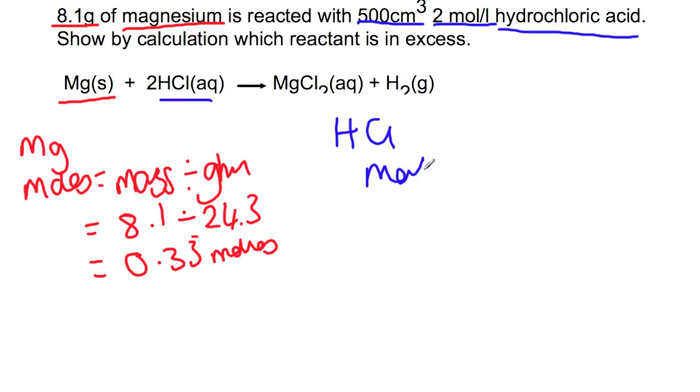For the HCl, the moles will equal concentration times volume. So your concentration is 2 molar hydrochloric acid. Your volume is 500 centimeters cubed. So divide it by 1000 and you will have 1 mole of hydrochloric acid present in your reaction.